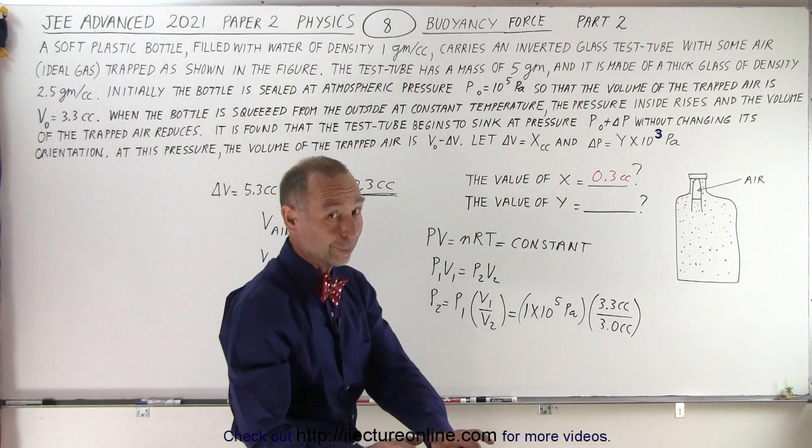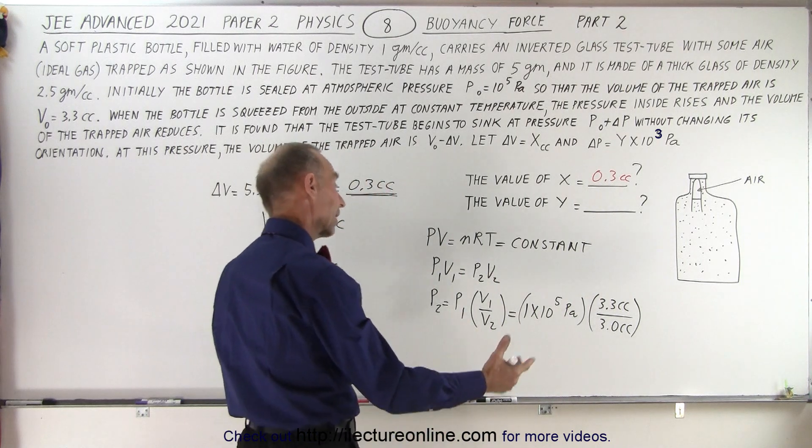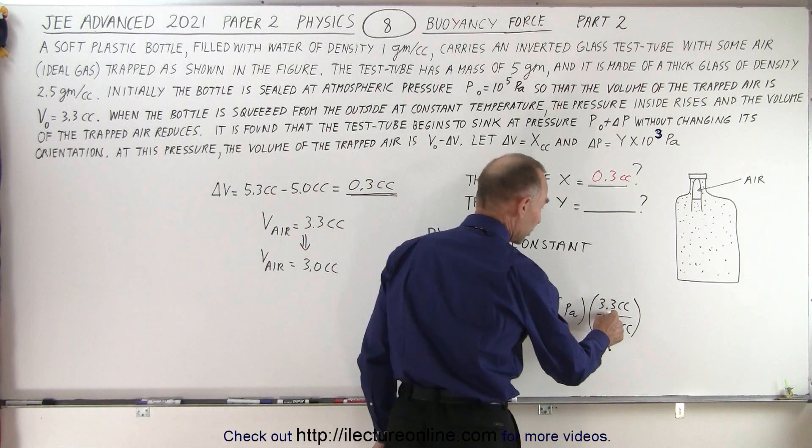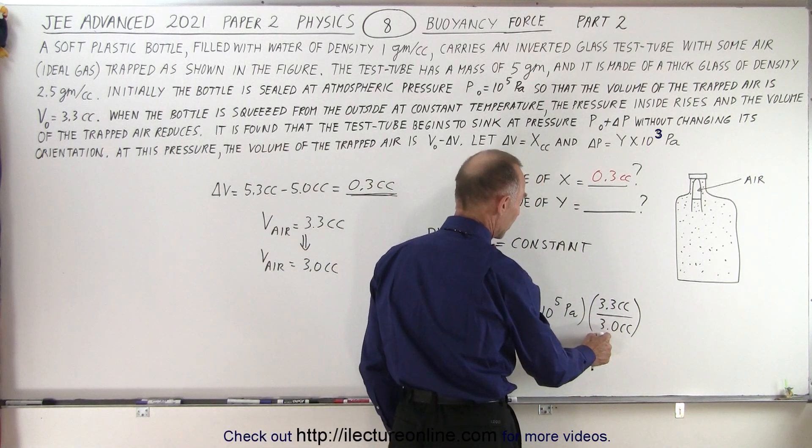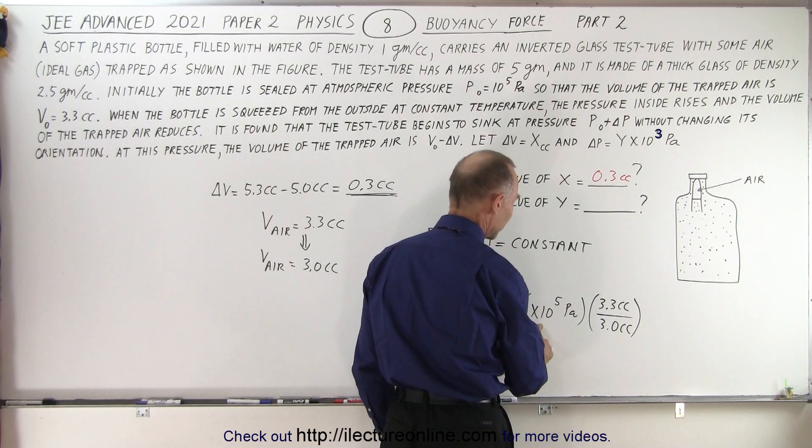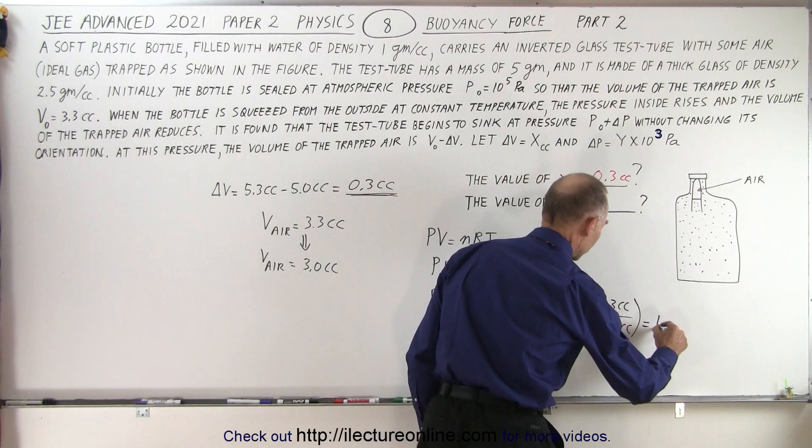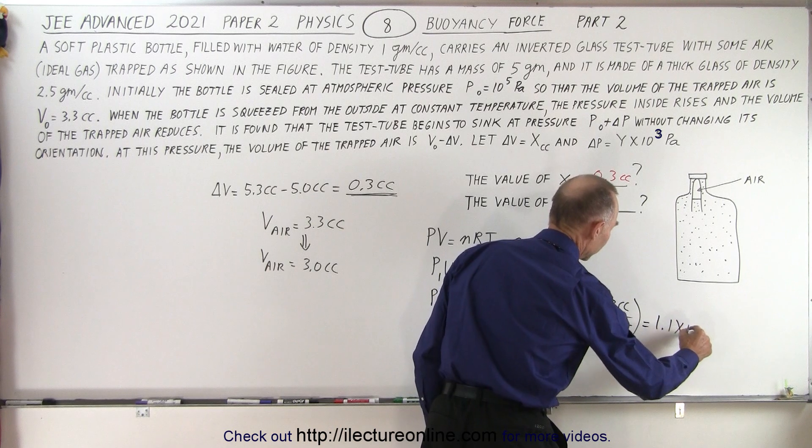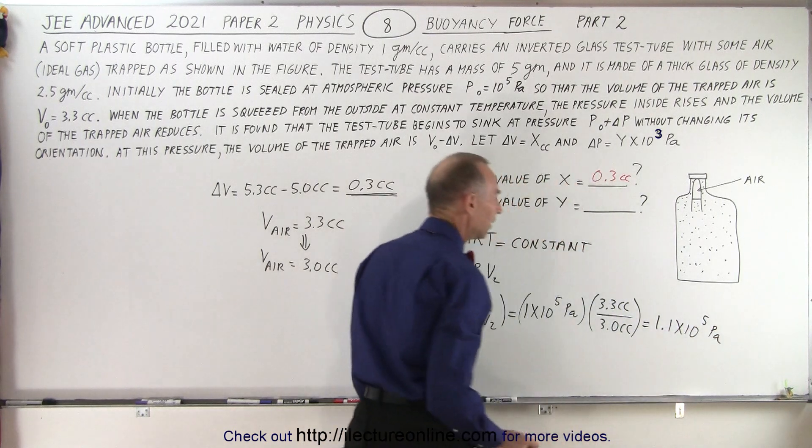The new volume will be 3.0 cc's, and notice that 3.3 is 10% more than 3.0 so we need to add 10% to that, so we know that this is going to be equal to 1.1 times 10 to the 5th pascals.